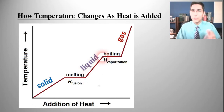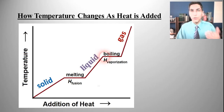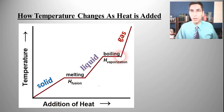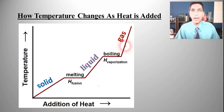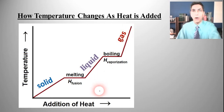Then something similar happens. We keep adding heat but as it's boiling the temperature actually stays the same — it stays constant at that boiling point. Once it's all boiled away and the substance is completely a gas, we can add more heat and then that gas is going to increase in temperature. This graph is called a heating curve.